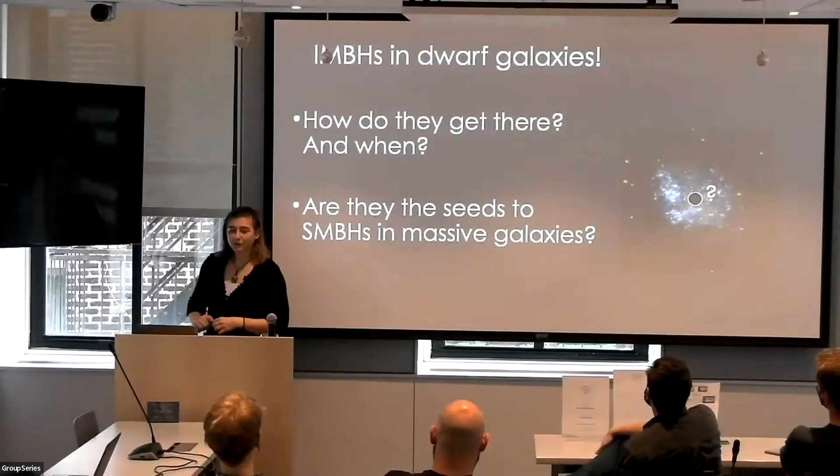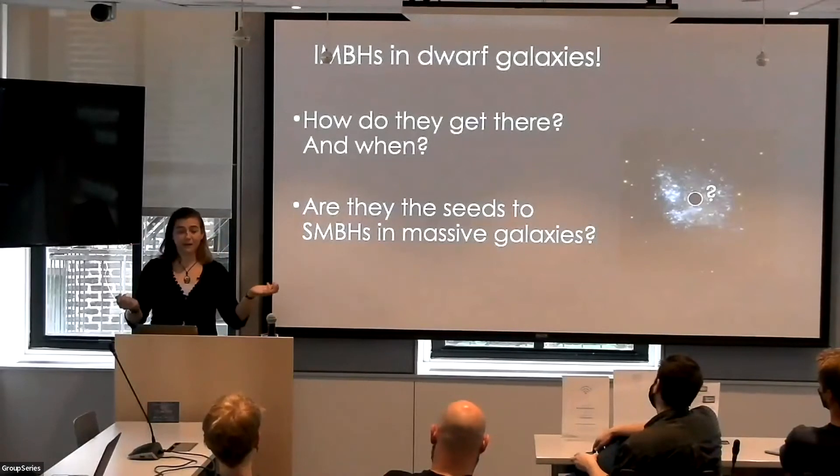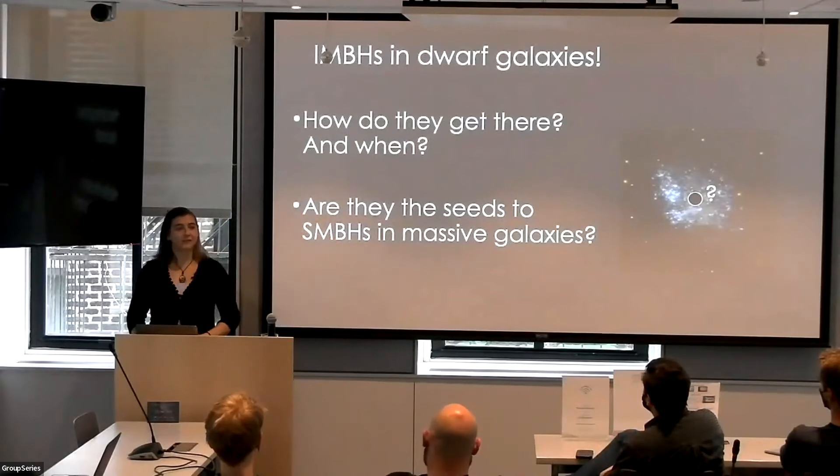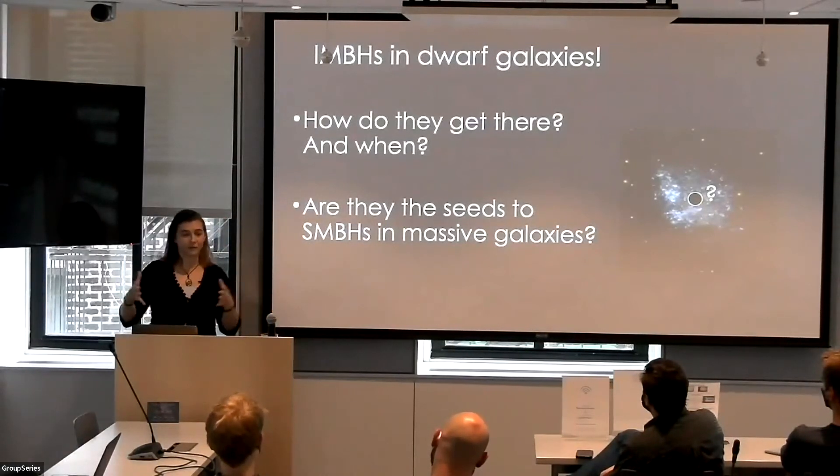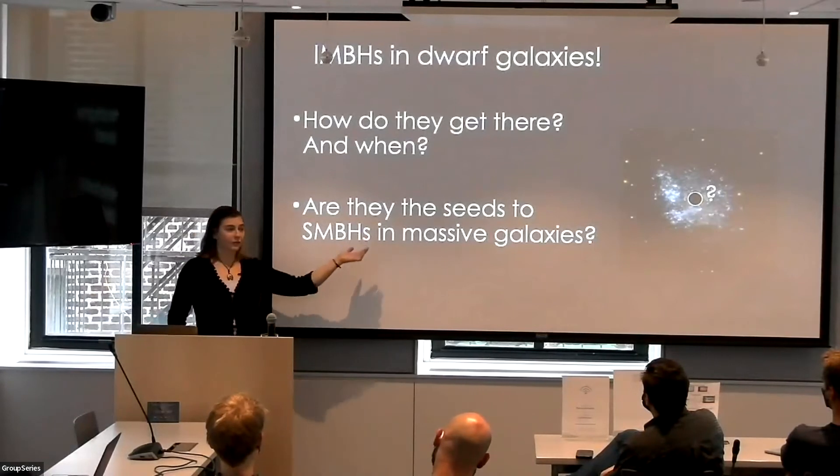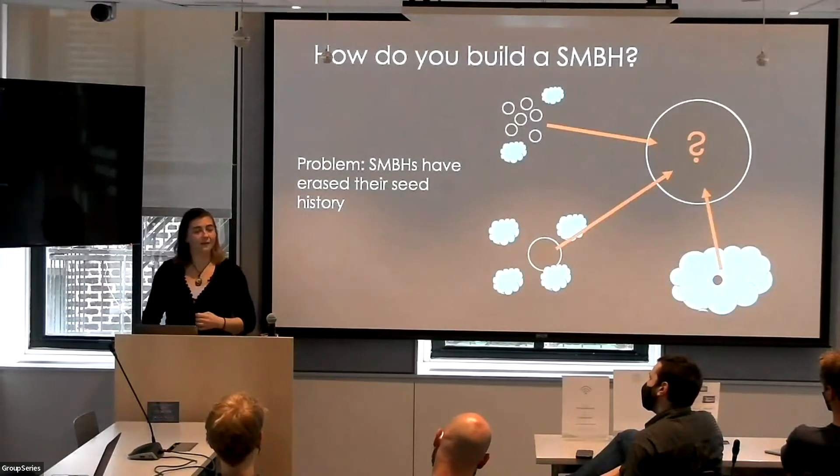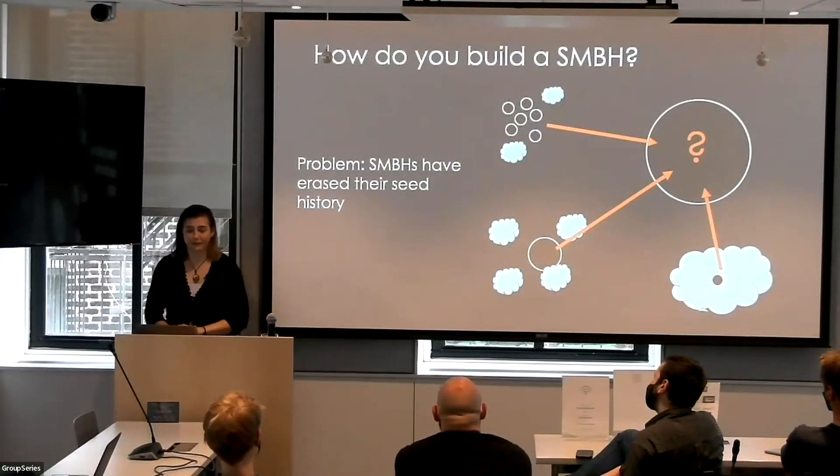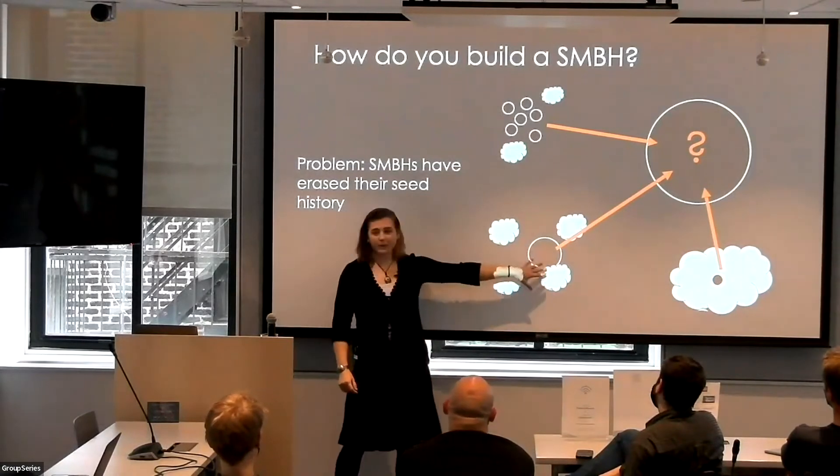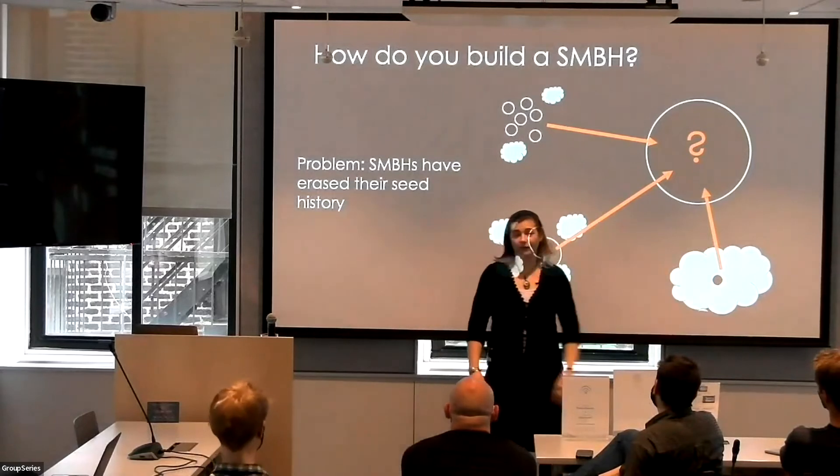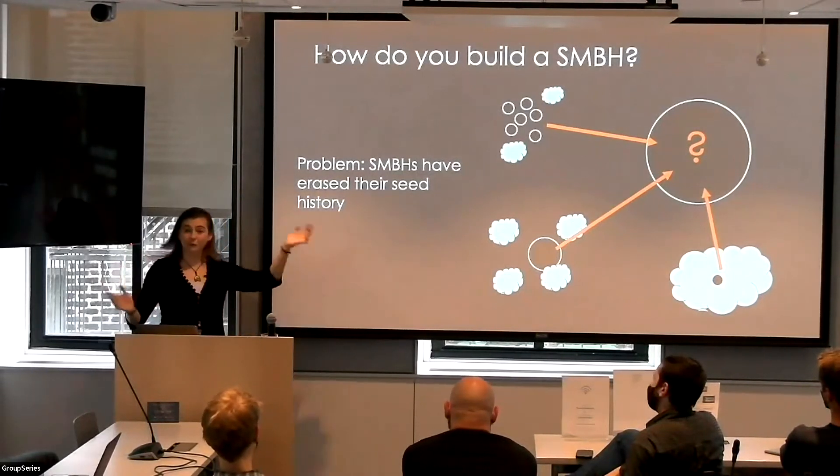So intermediate mass black holes in dwarf galaxies, I'm interested in figuring out how do they get there? When do they get there? Why are they sometimes there and sometimes not? And specifically, are they the seeds, these IMBHs, are they the seeds to supermassive black holes in massive galaxies? Do they have something to do with how supermassive black holes form in the early universe, some sort of intermediate mass seed early on? But maybe these don't grow into supermassive black holes based on some environmental or other physical reason.